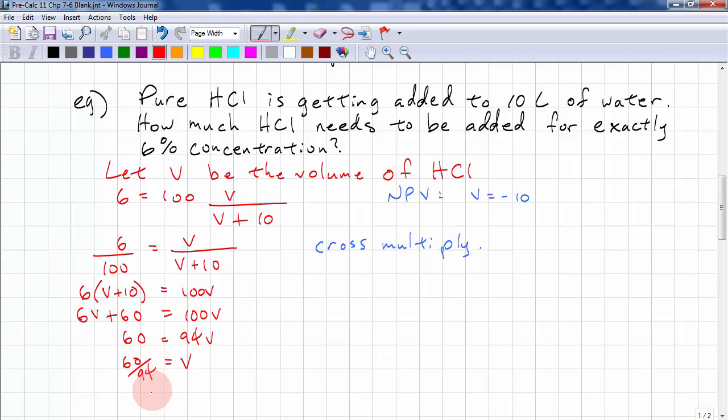And we can reduce this a bit. V equals, we take 2 out from the numerator and denominator, so this is 30 over 47. And that's going to be approximately 0.638 liters. And it's good because it's not the NPV.